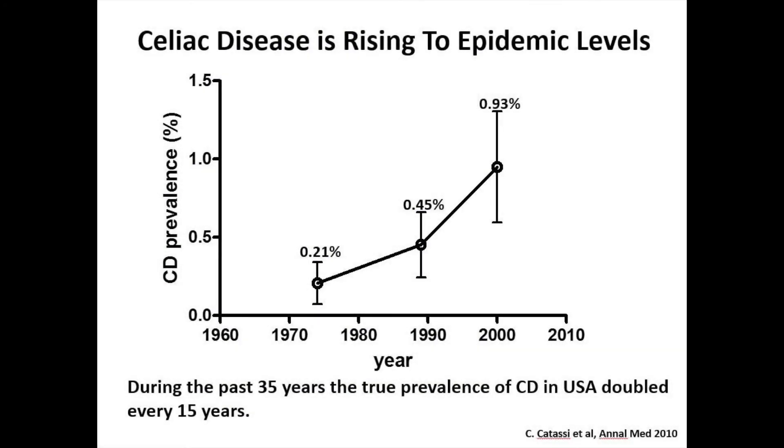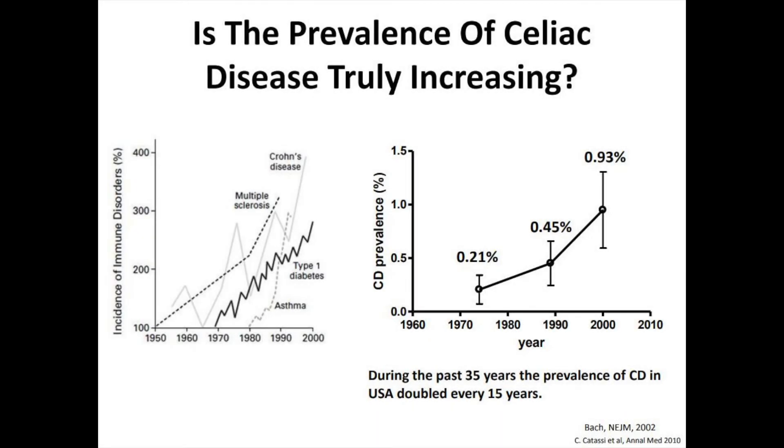This study also revealed that the prevalence of celiac disease is rising. Looking at healthy blood donors over 35 years, they found the prevalence was doubling every 15 years. While some attributed this to better testing and awareness, the truth is this is happening with all autoimmune diseases — whether multiple sclerosis, Crohn's disease, or type 1 diabetes — and celiac disease is rising along with them.